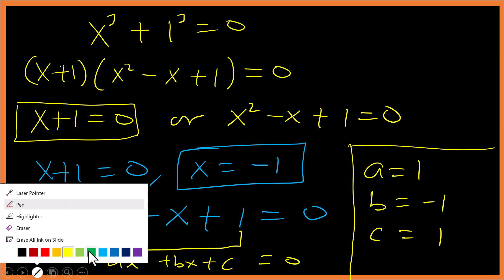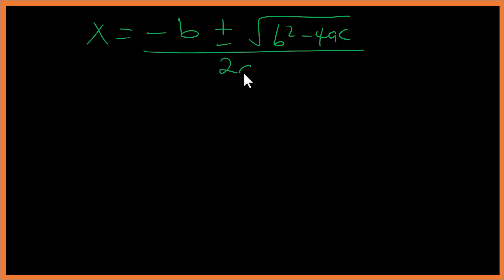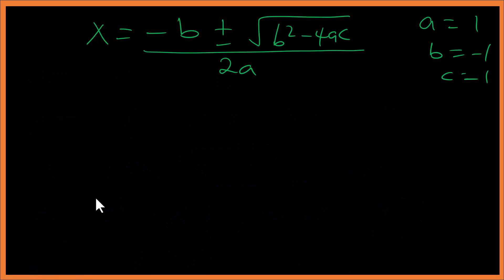Knowing a, b, and c, we can use the general quadratic formula: x equals negative b plus or minus the square root of b squared minus 4ac, all over 2a. Here a is one, b is negative one, and c is one.